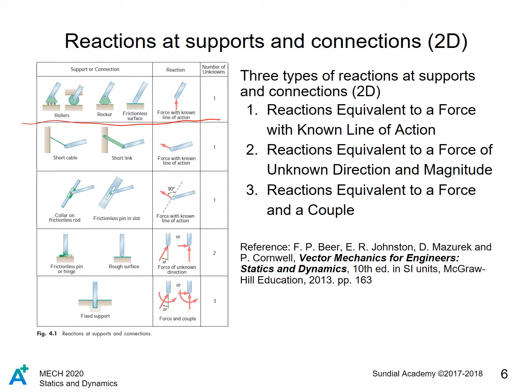The second type is the reaction equivalent to a force of unknown direction and magnitude. This type involves two unknowns, and one typical example is a frictionless pin or hinge, shown here. Most of these cases we'll cover.